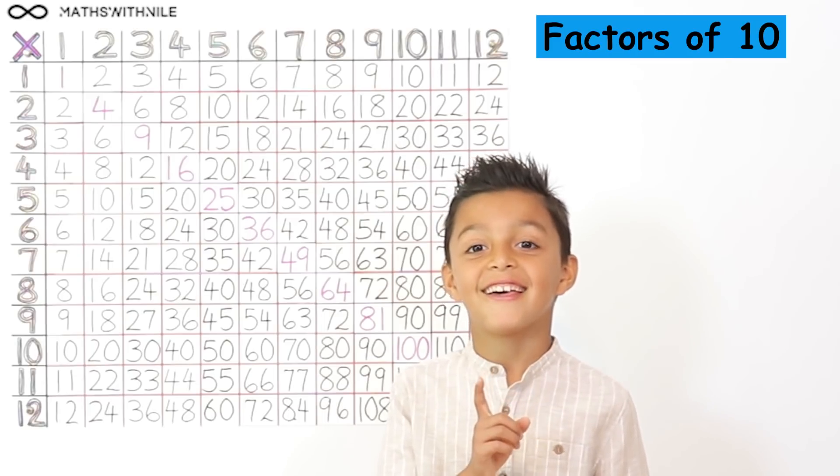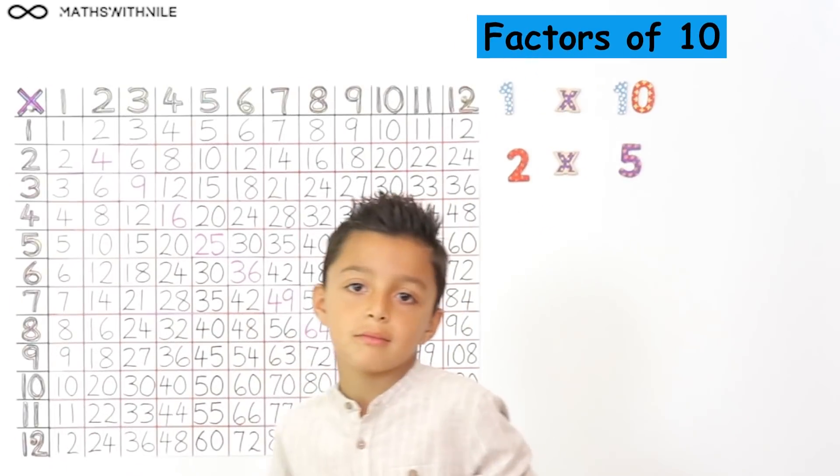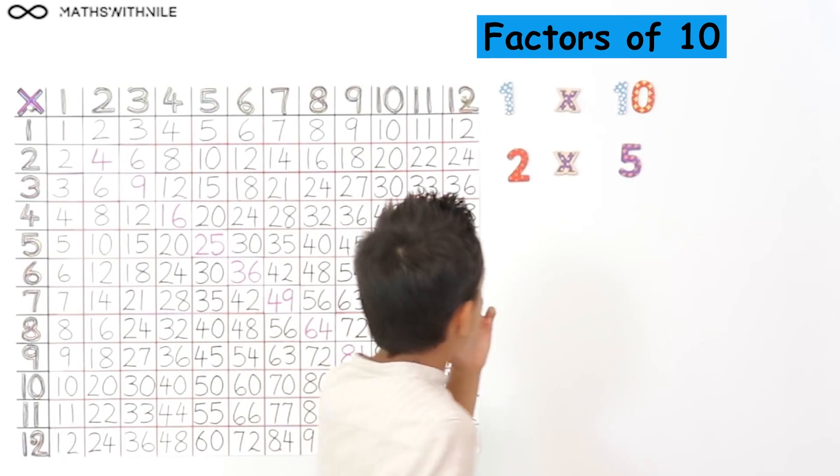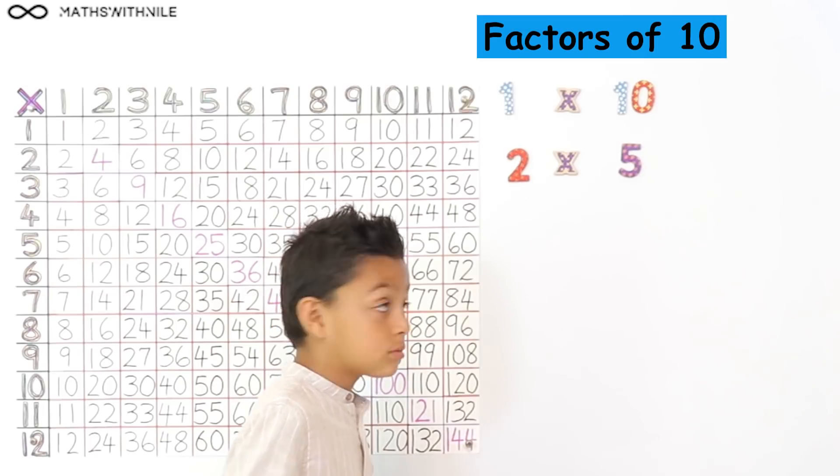1. 10 times. Yes. Brilliant. So because 1 times 10 gives us 10 and 2 times 5 gives us 10, all of those numbers are factors of 10.